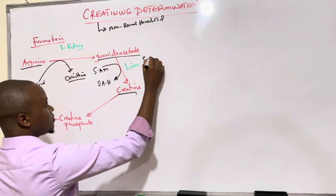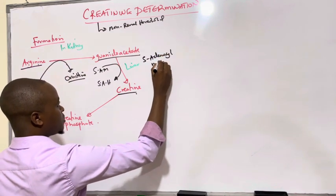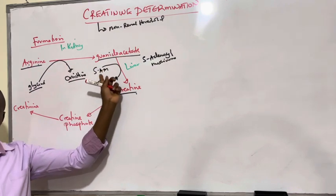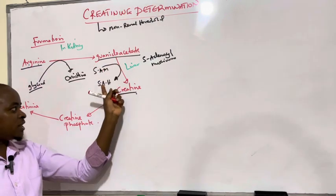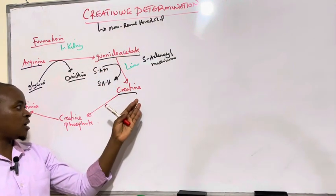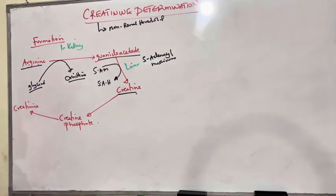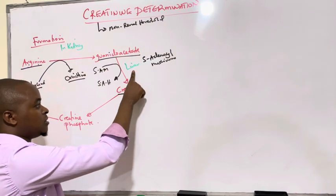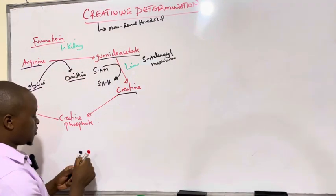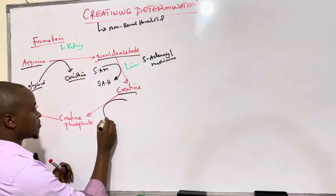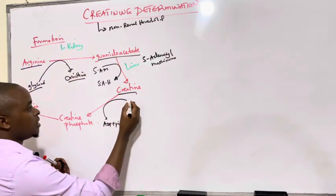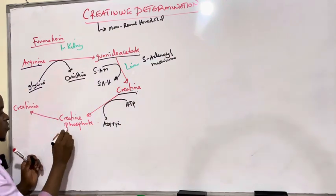S-adenosyl methionine converts guanidoacetate in the liver to creatine, which is the precursor we use in biosynthesis of creatinine. Whenever we form creatine in the liver hepatocytes, this creatine in the hepatocytes will have their mitochondria, and this mitochondria is going to donate ATP. So we shall see that we can phosphorylate creatine, whereby ATP in the mitochondria of the liver hepatocytes is hydrolyzed to ADP plus inorganic phosphate, hence adding a phosphate group on creatine to form creatine phosphate.